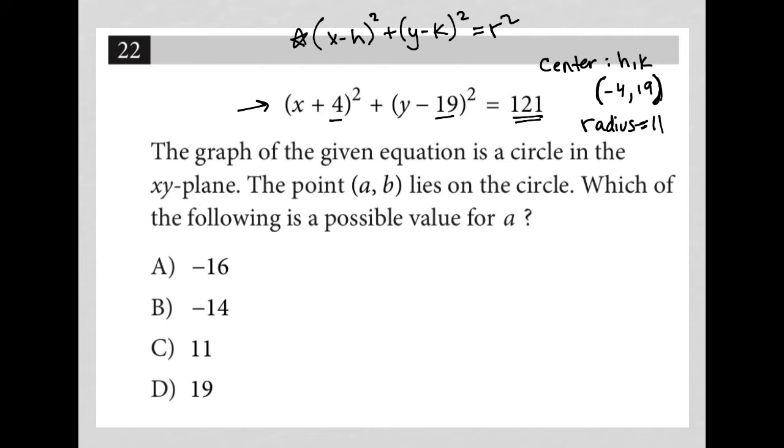So I could graph that if I wanted to. I'm going to read the question and just see what exactly they want me to do with this. So the graph of the given equation is a circle in the xy plane. The point a,b lies on the circle, which of the following is a possible value for a?